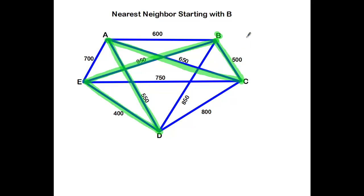And so to build the Hamiltonian circuit, I've got B. I went to C. Then A. Then D. Then E. And back to B. And the values. I have 500, 650, 550, 400, and 950.